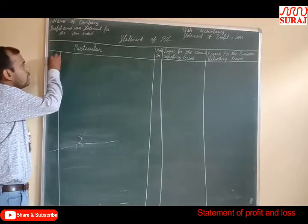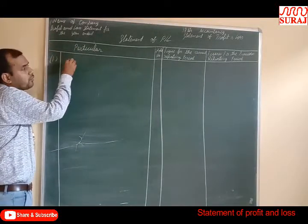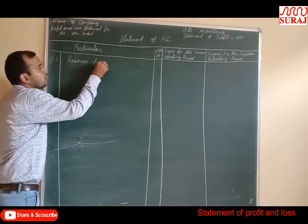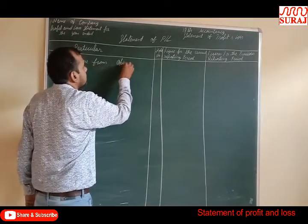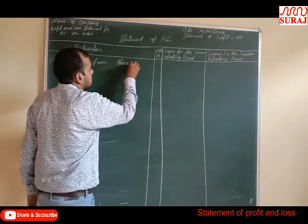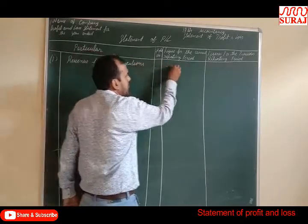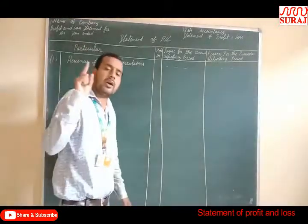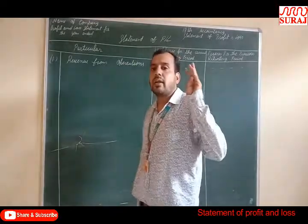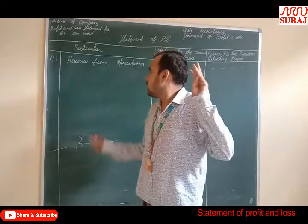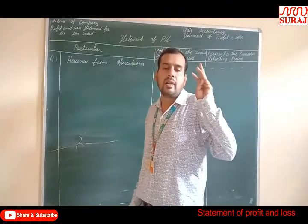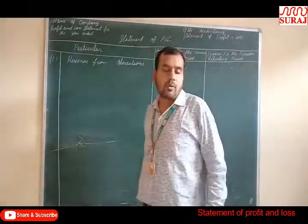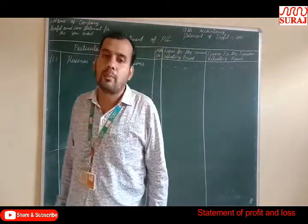For Statement of Profit and Loss, the first item is Revenue from Operations. This includes Sale of Goods, Sale of Scrap. In addition, if you have a financing business, interest received is also included in Revenue from Operations.